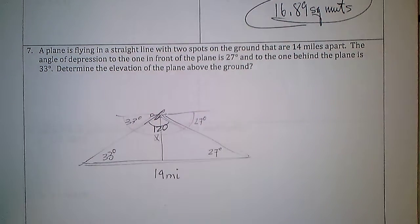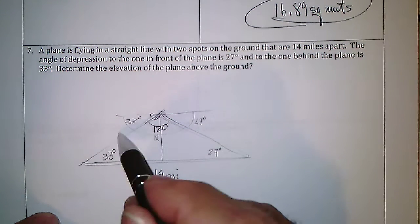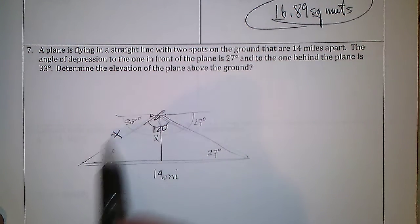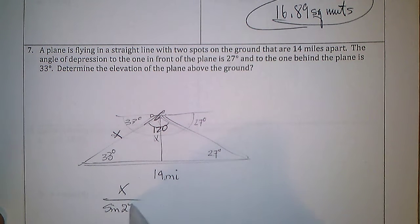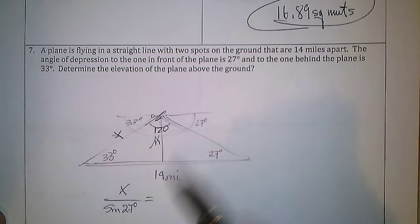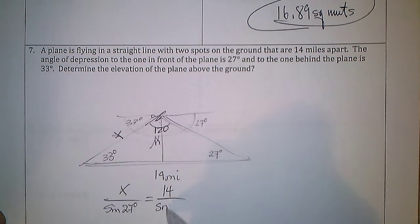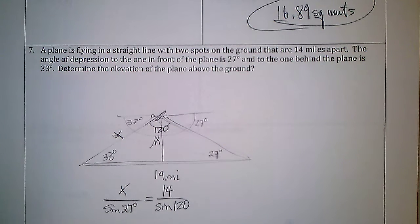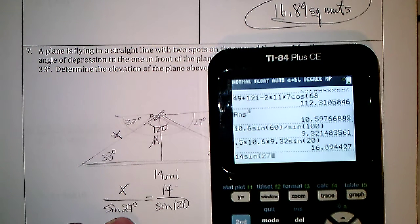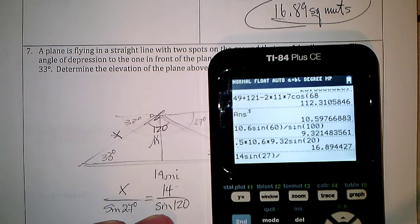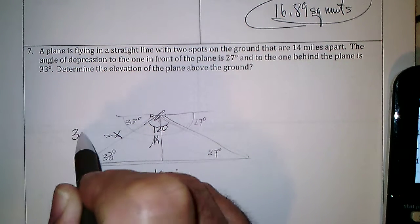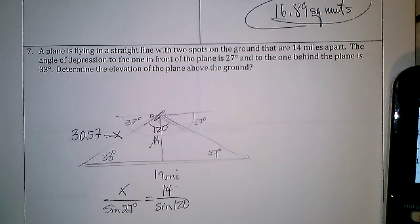We can figure out this triangle easily because we've got angle-side-angle. The third angle would be what's left of 180: 33 + 27 = 60, so this is 120 degrees up here. Using the law of sines: x over sine(27°) equals 14 over sine(120°). Multiplying by sine(27): 14 × sine(27) divided by sine(120), this side is 7.73 miles.